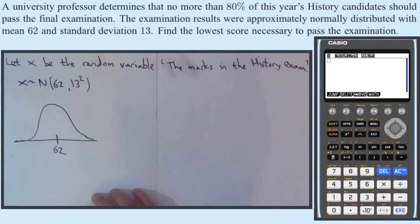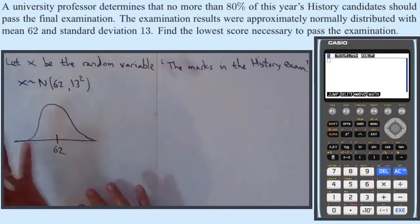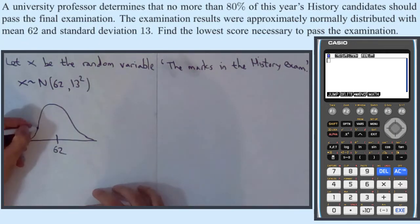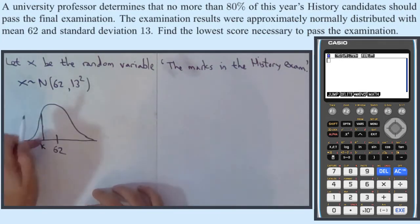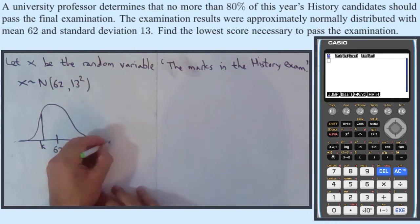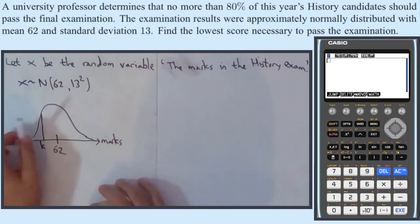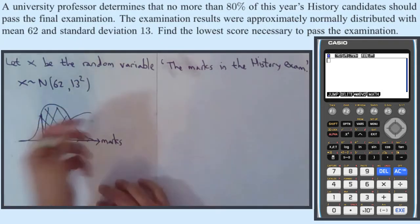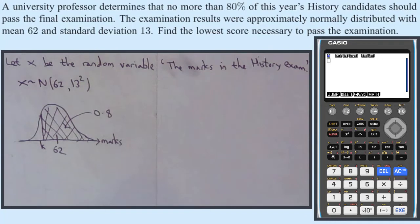So mean of 62 symmetrical about the mean and we want no more than 80% to pass. Right so 80% are going to pass which means they got the pass mark or more. So you're going to really be in here somewhere, maybe around here somewhere, so this can be our k. K is going to be a pass mark and remember 80% pass. So all of these people got more than the passing mark and we need that to be 80% of the cohort which means that this area, the percentage of the area is 0.8. Right so now we're looking for k such that the probability X is greater than or equal to k needs to be 0.8.